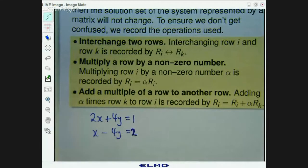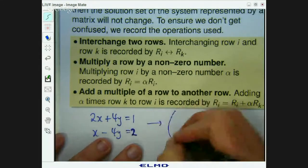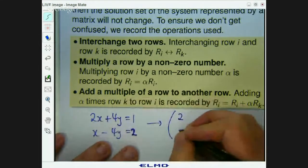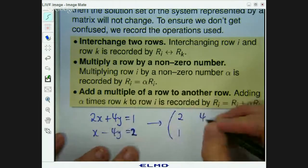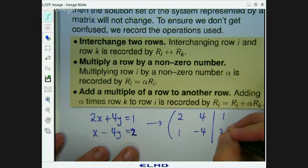Okay, so here the unknowns are x and y and you can transfer this to an augmented matrix just by writing the coefficients of x as a column, the coefficients of y as a column and the right hand side as a column.